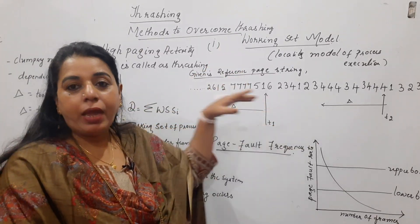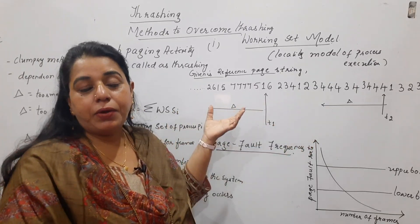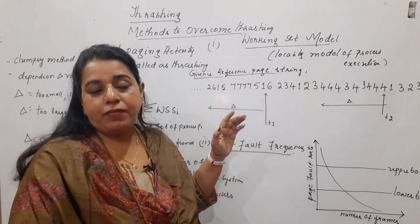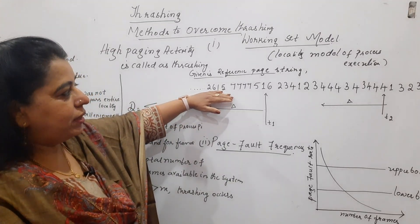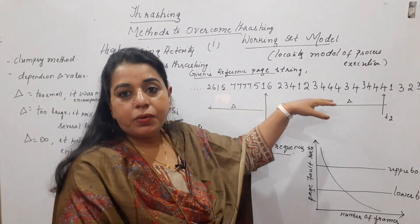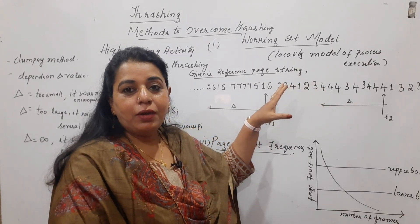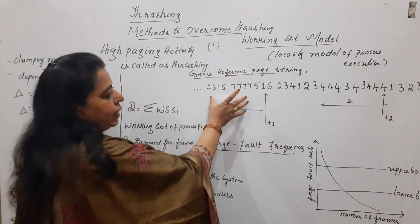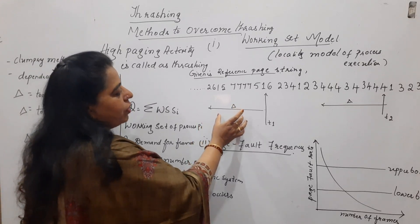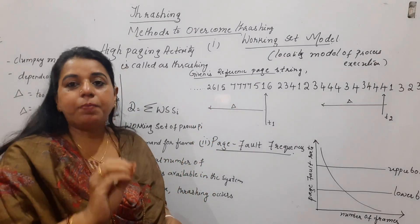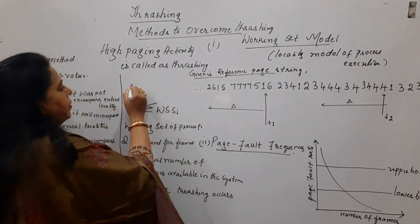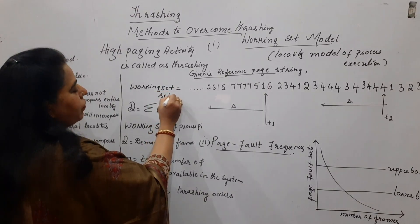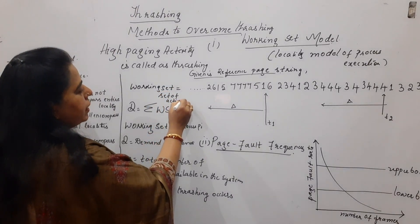When a process is getting executed, the pages needed for execution in sequence are given — we call that the reference string. This reference string is noted from the textbook 'Operating System Principles' by Galvin. We have to come out with a value for the working set. In simpler words, the working set is the set of active pages of a process.